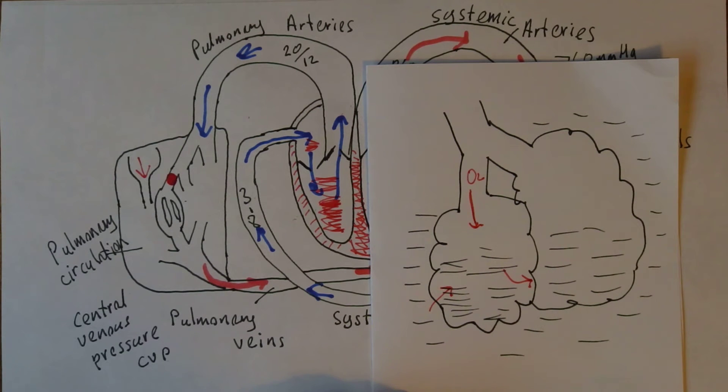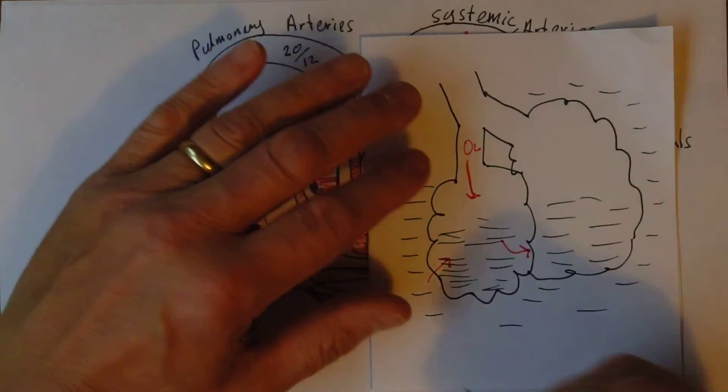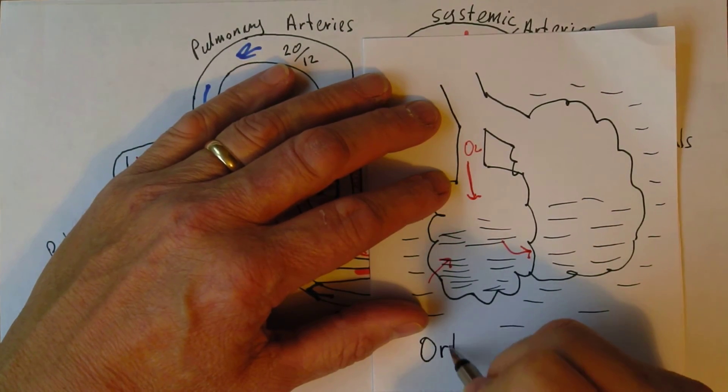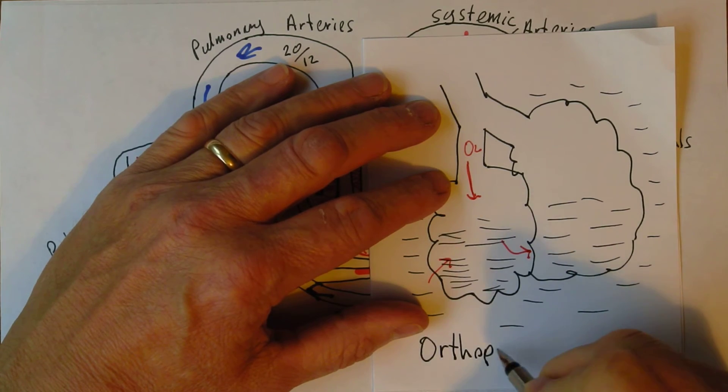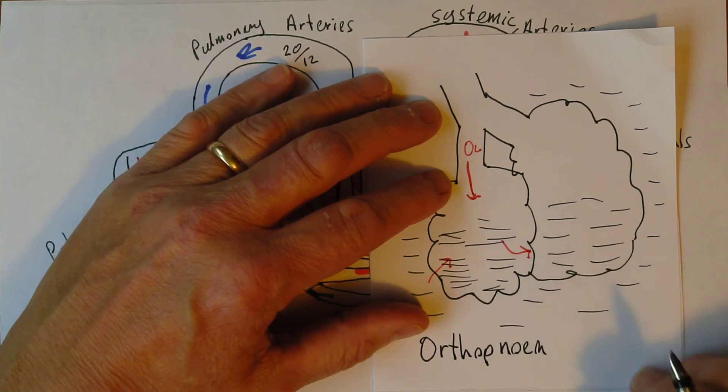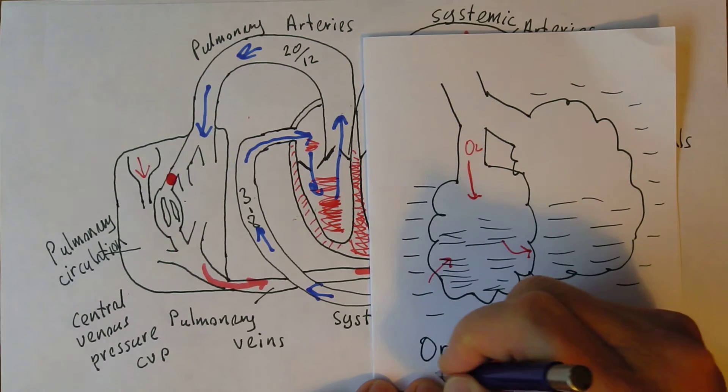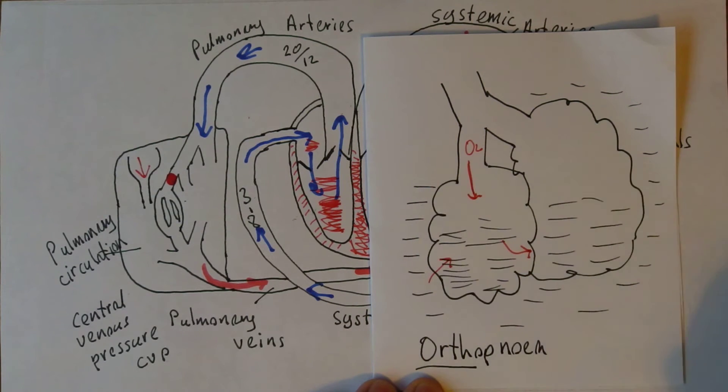So there can be an acute pulmonary oedema. Now one of the first features we get in this is orthopnea. Ortho actually means straight. Panea means to do with air or breathing.